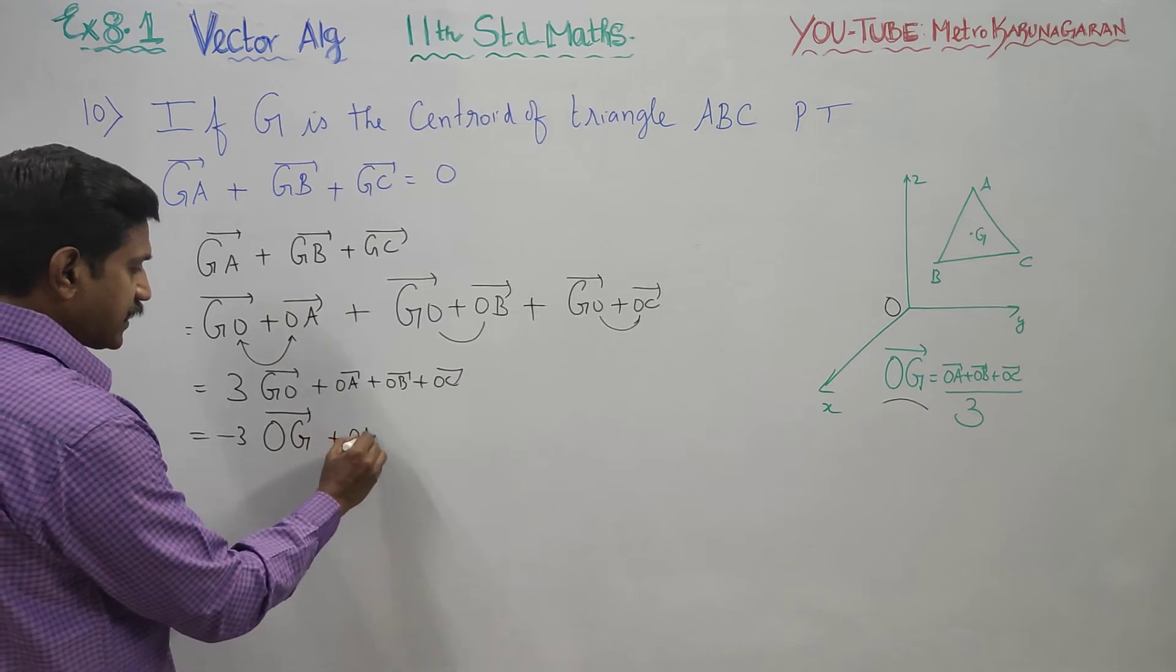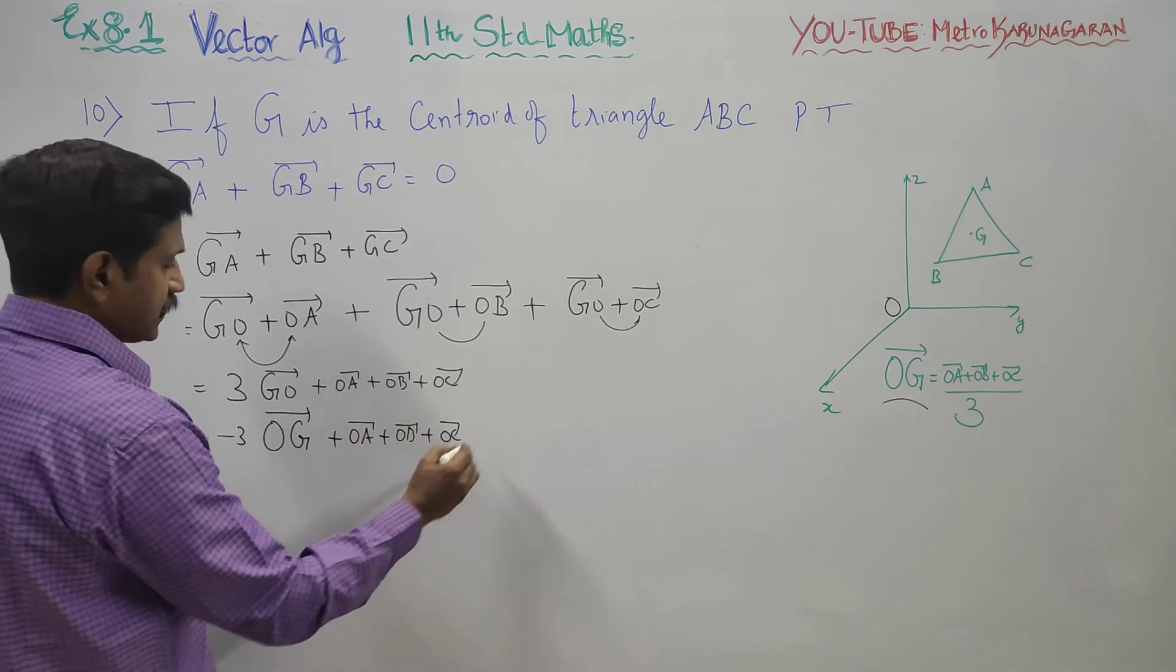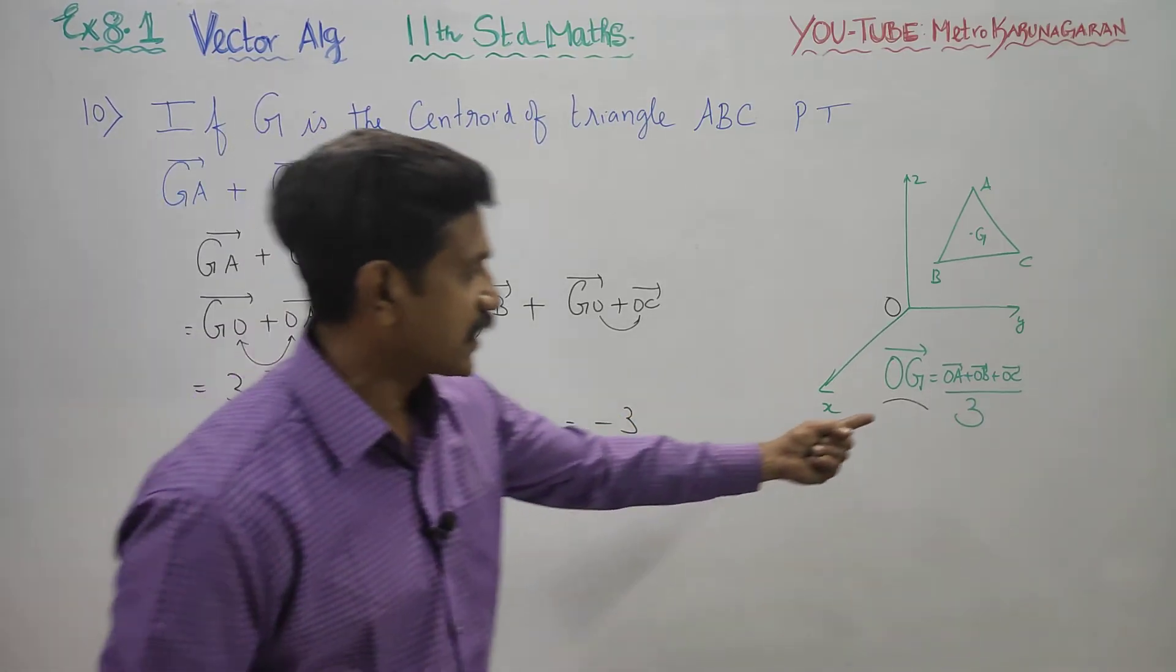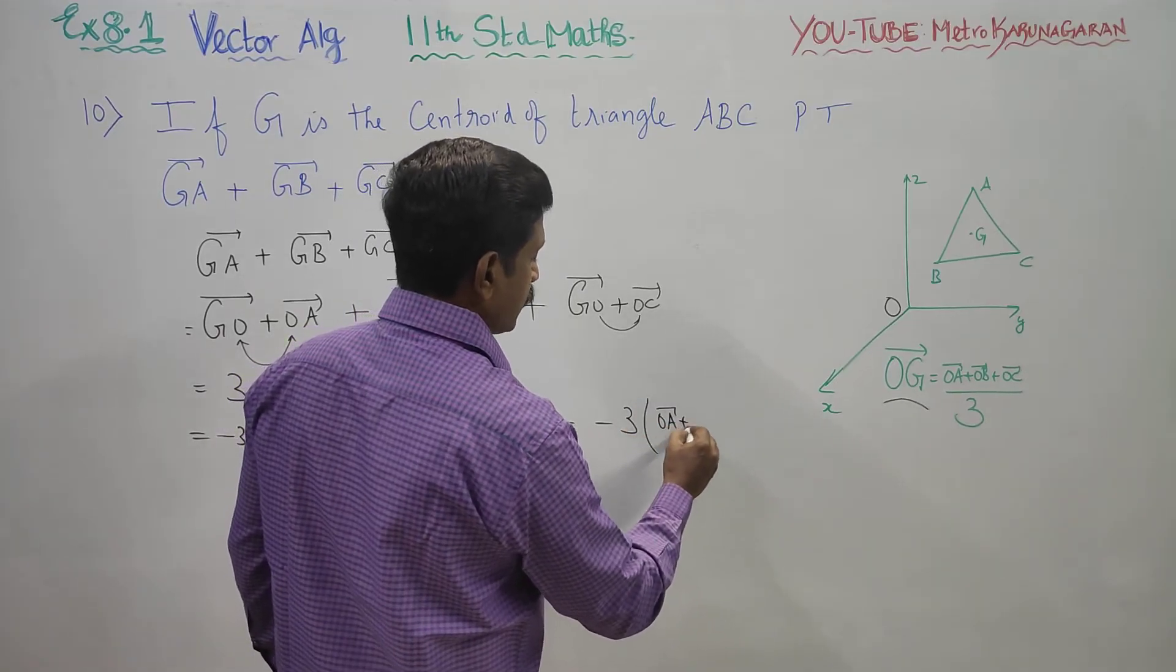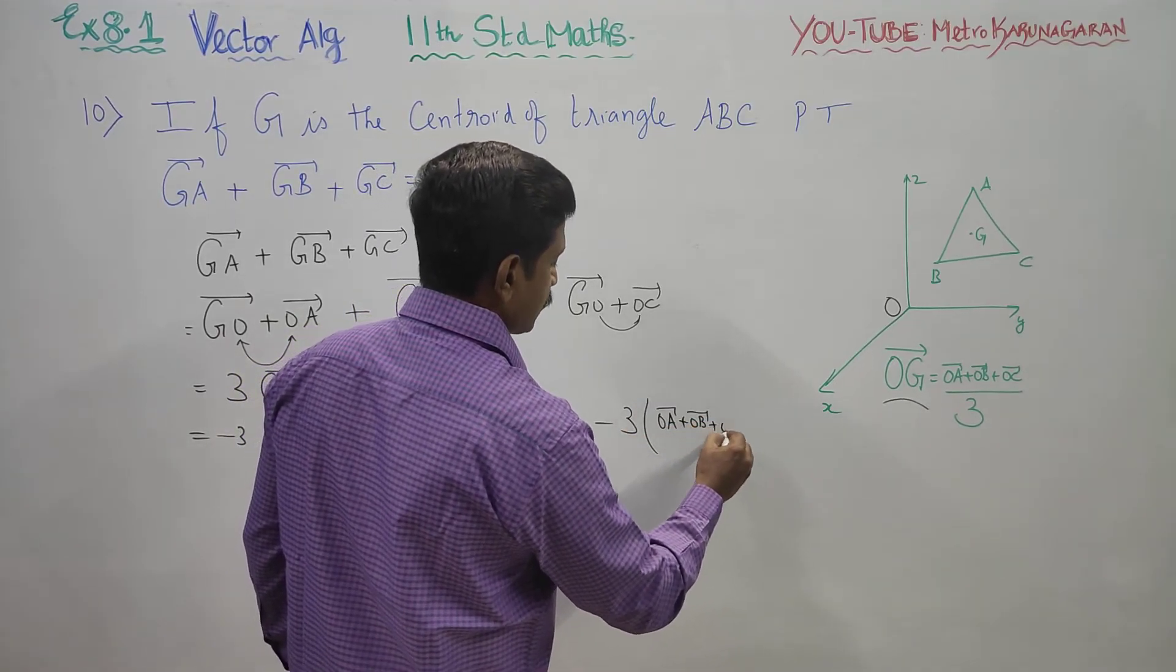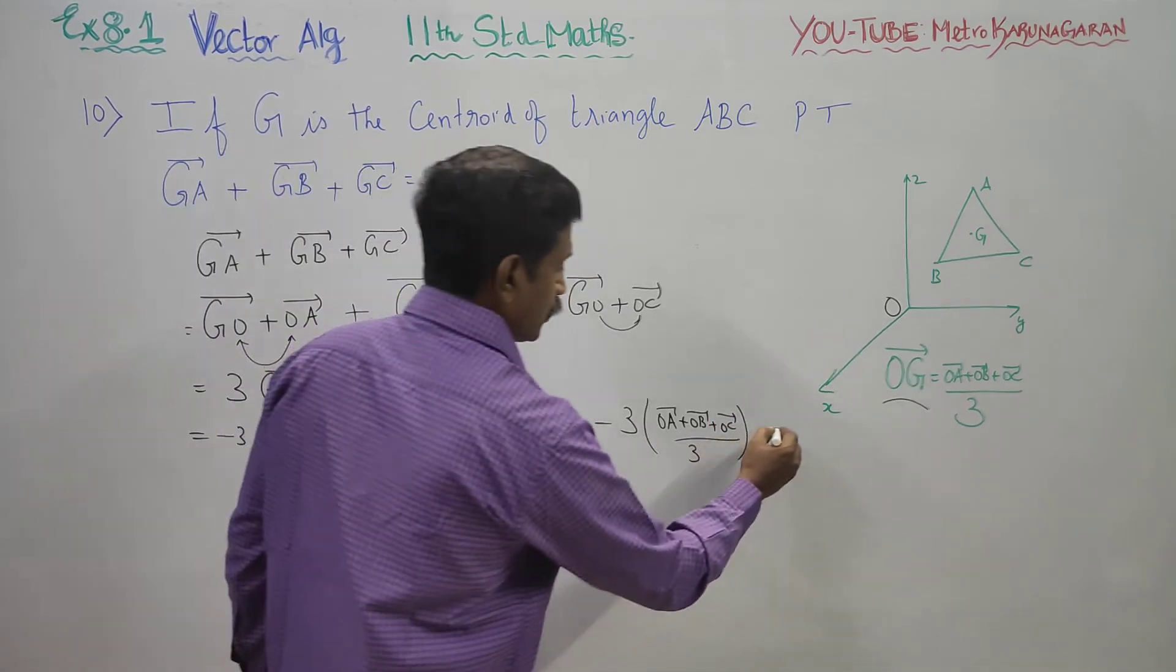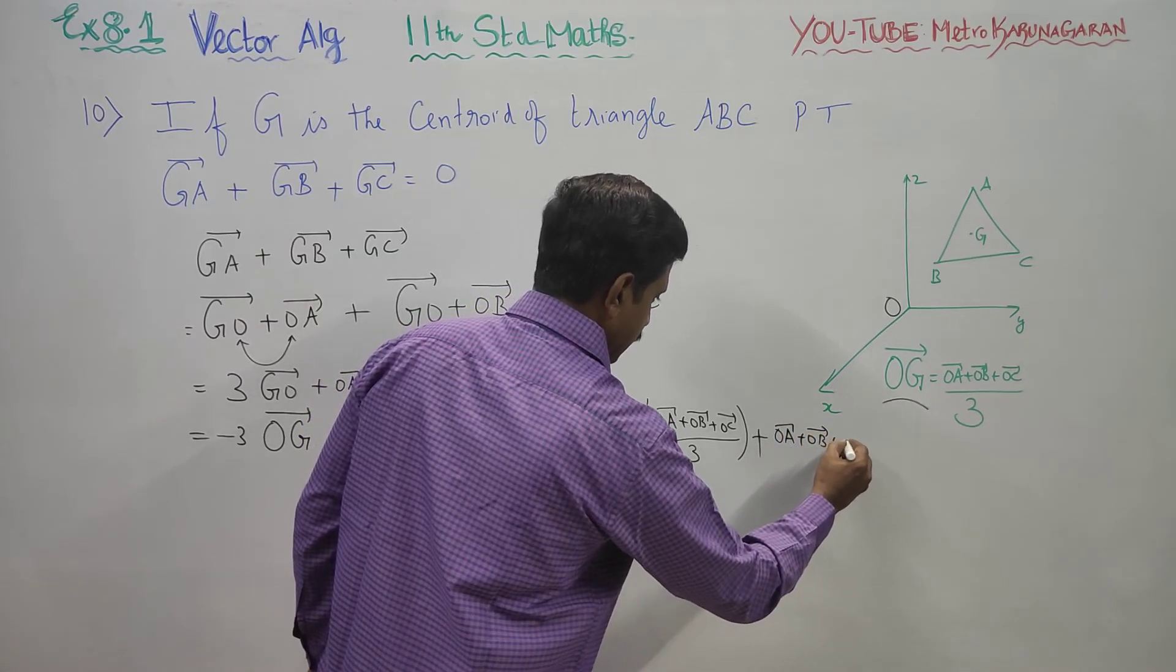This equals minus 3 times OG vector plus OA vector plus OB vector plus OC vector. What is OG? It's OA vector plus OB vector plus OC vector, all divided by 3. Substituting this in, we get minus 3 times (OA plus OB plus OC)/3 plus OA plus OB plus OC.